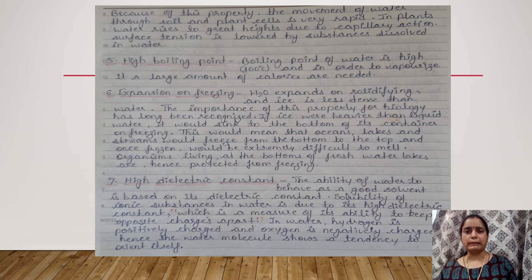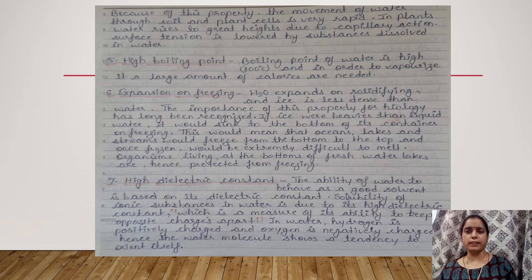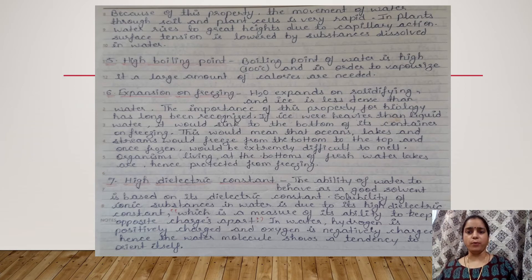This would mean that oceans, lakes, and streams would freeze from the bottom to the top, and once frozen would be extremely difficult to melt. Organisms living at the bottom of freshwater lakes are protected from freezing because ice formation starts from top to bottom, forming an insulating layer between the environment and the bottom of the lake. The temperature beneath this ice layer is very high compared to the outer environment, keeping living organisms protected.